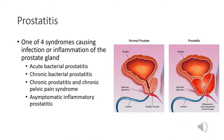Prostatitis can be categorized into four syndromes: acute bacterial prostatitis, chronic bacterial prostatitis, chronic prostatitis/chronic pelvic pain syndrome, and asymptomatic inflammatory prostatitis. Acute and chronic bacterial prostatitis are defined by documented bacterial infections of the prostate and are treated with antibiotic therapy and supportive care. Chronic prostatitis and chronic pelvic pain syndrome are very common urological complaints occurring in the absence of a urinary tract infection and can be categorized as inflammatory or non-inflammatory subtypes.